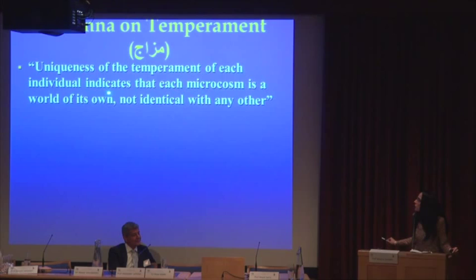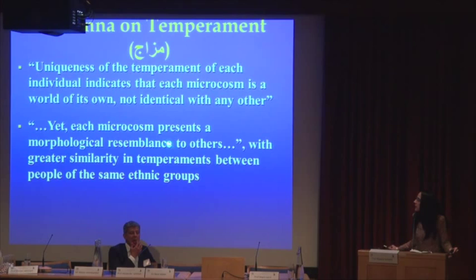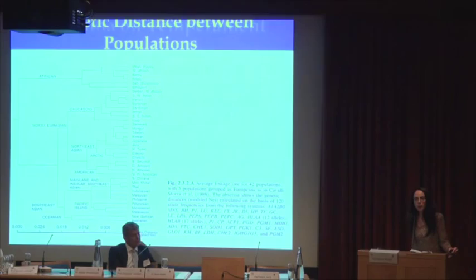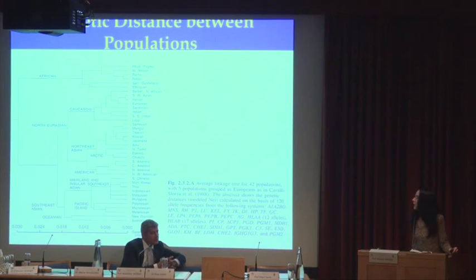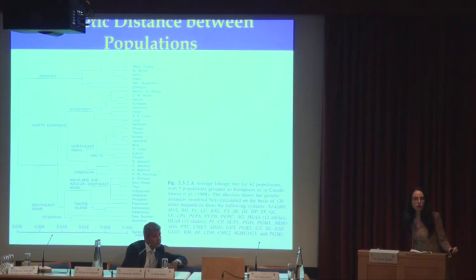We now know that the uniqueness of each individual is partially due to the unique genetic makeup of each person. Avicenna also noted similarities between constitution and temperaments, particularly between people of the same ethnic groups. This is in line with modern genetic concepts of ethnic-specific variations and genetic distance between populations. Genetic distance is defined as the degree of genomic divergence between populations and is a measure used in evolutionary genetics and phylogenetic studies, looking at how similar or dissimilar populations are with respect to their overall genomic sequences.